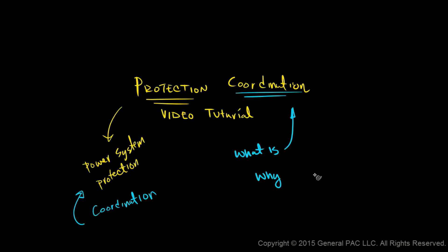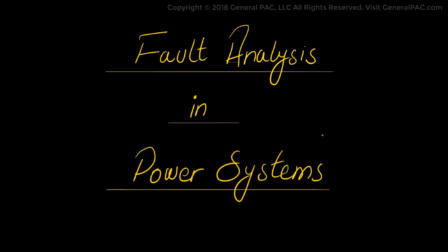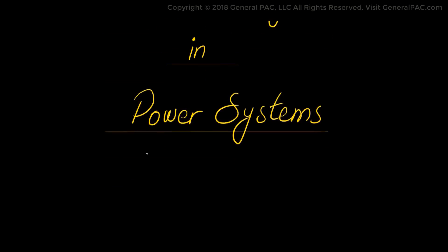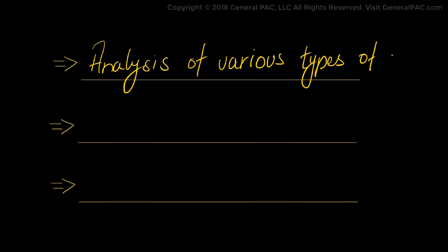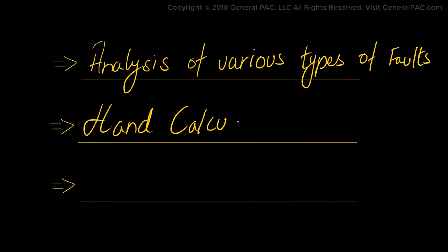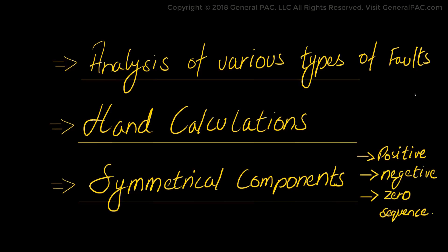Fault Analysis in Power Systems, Part 1A. In this series, we'll be going over the analysis of the various types of faults that occur in power systems, while intuitively understanding the hand calculations involved. When we talk about hand calculations, we're actually talking about symmetrical components — positive, negative, and zero sequence components — because without those symmetrical components, it would be very difficult to calculate fault currents.